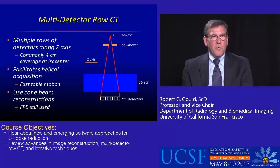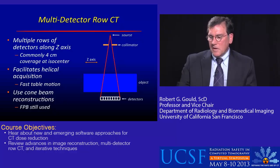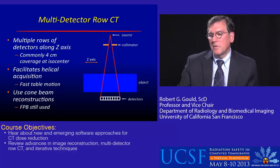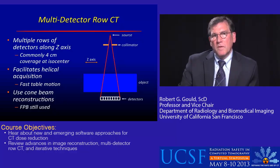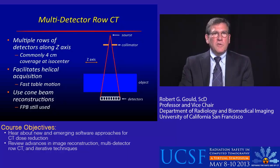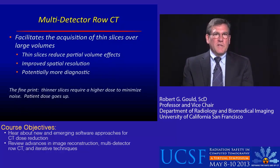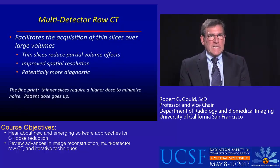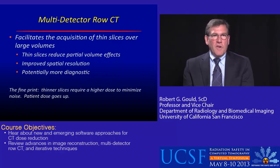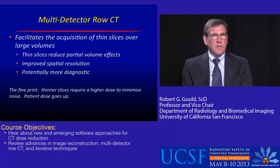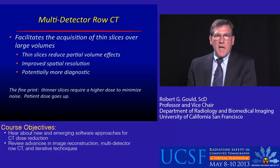You still use filtered back projection, but cone beam reconstructions can be used. Multi-detector row CT facilitates the acquisition of thin slices over large volumes. Thin slices reduce partial volume effects and improve spatial resolution, making them potentially more diagnostic.